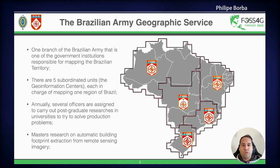I'm an officer from the Brazilian Army Geographic Service, which is one of the government institutions responsible for mapping the Brazilian territory. There are five subordinate units, the GeoInformation Centers, each in charge of mapping one region of Brazil. Annually, several officers are assigned to carry out postgraduate research in universities to try to solve production problems. I have carried out my master's research on automatic building footprint extraction from remote sensing imagery.